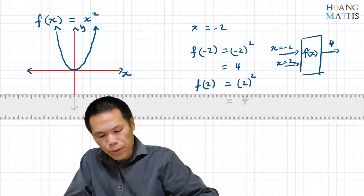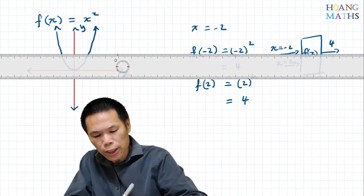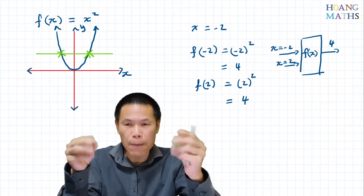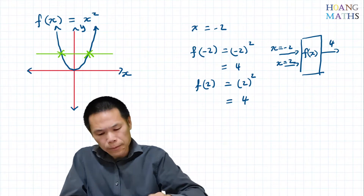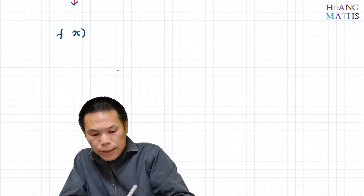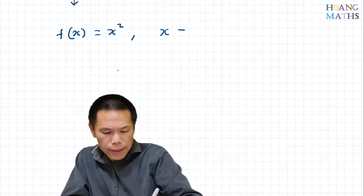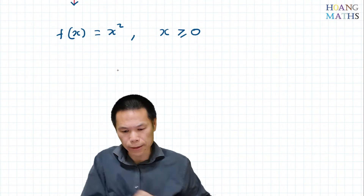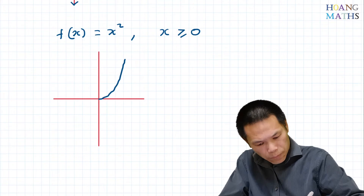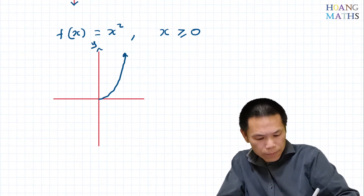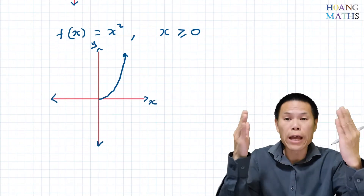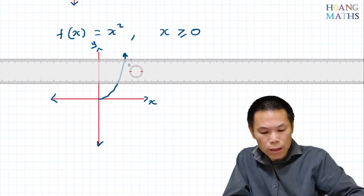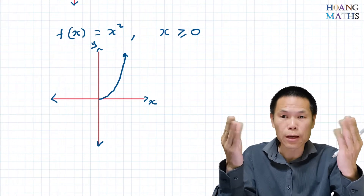We can use the horizontal line test: if I draw a horizontal line across the graph, it cuts the curve twice, so we cannot have an inverse function. However, if we change the domain — say f of x equals x squared with domain x greater or equal to zero — the graph is restricted to only positive x values, and the function becomes one-to-one.